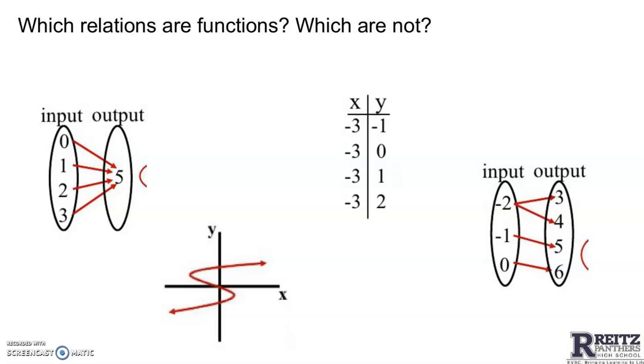I think only one of these is a function. The one that is a function is this one here, because every x has only one y. It's okay that 0 goes with 5 and 1 goes with 5 and 2 goes with 5 and 3 goes with 5. Every x you know exactly where it goes: 0 goes to only 5, 1 goes only to 5, 2, and 3.